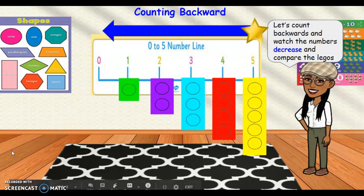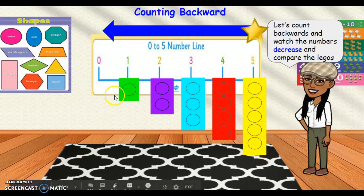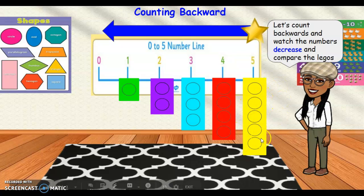Good job. Alright, so let's compare. Which color Lego has the most circles, or has more circles? Yes, the yellow one. Good job. So we could say that the yellow Lego has more circles than the others. Another word we could use is greater, because greater means more. So we could say the yellow Lego is greater than the rest of the Legos.